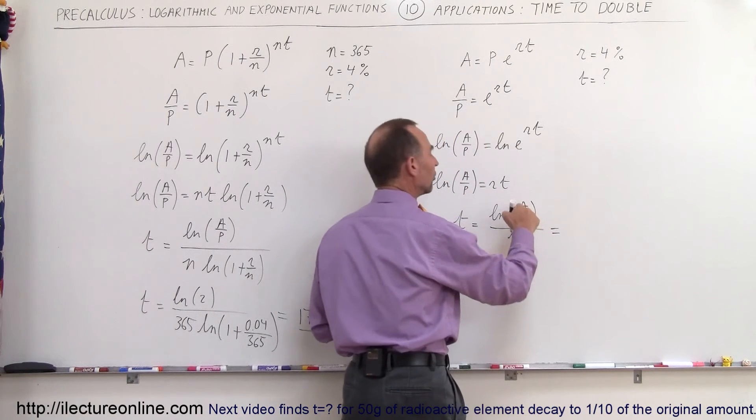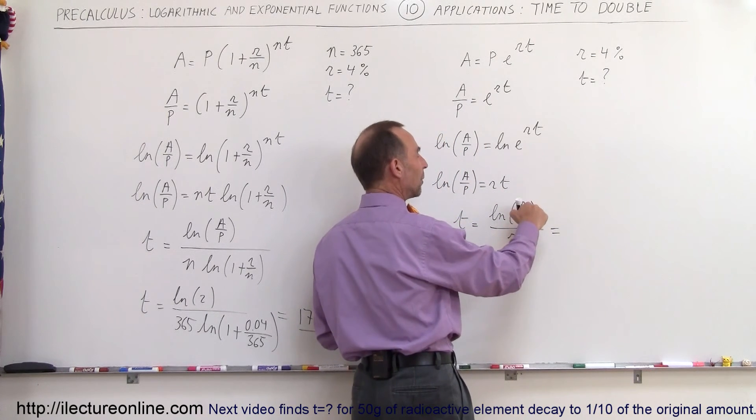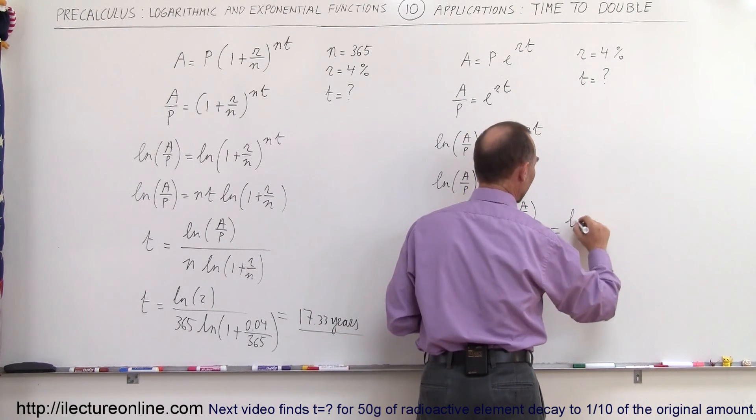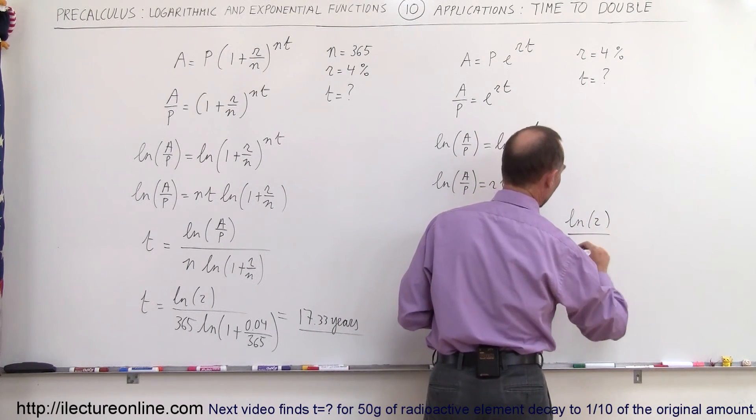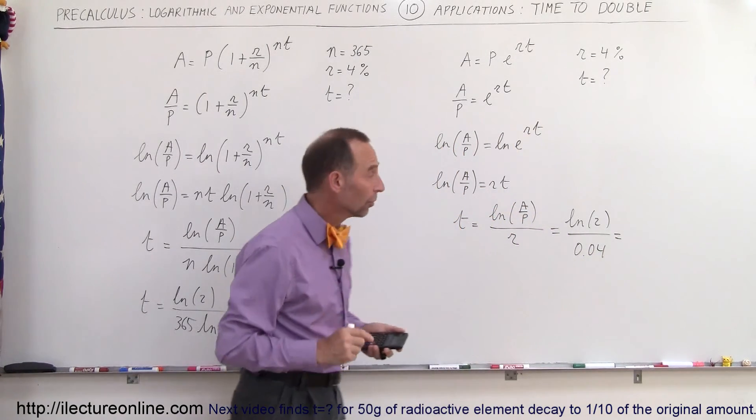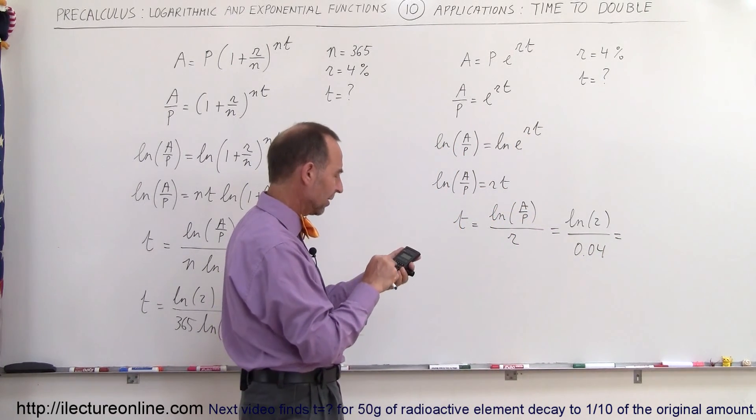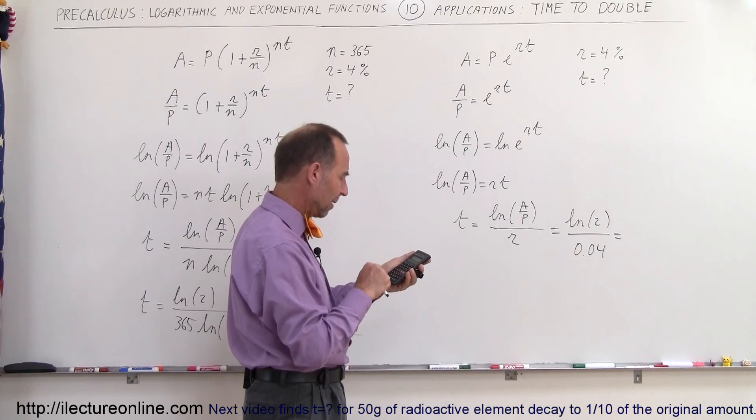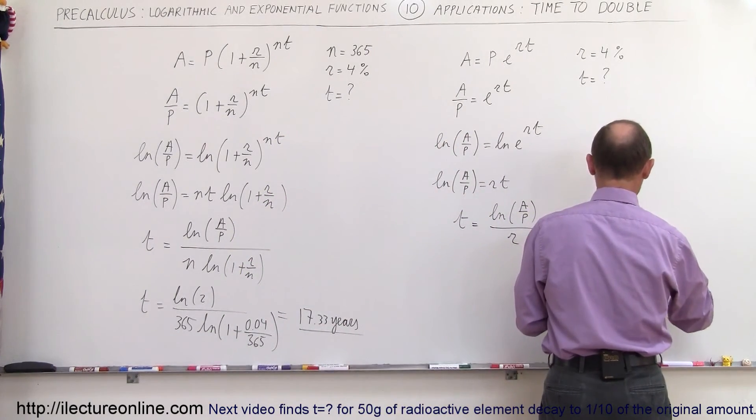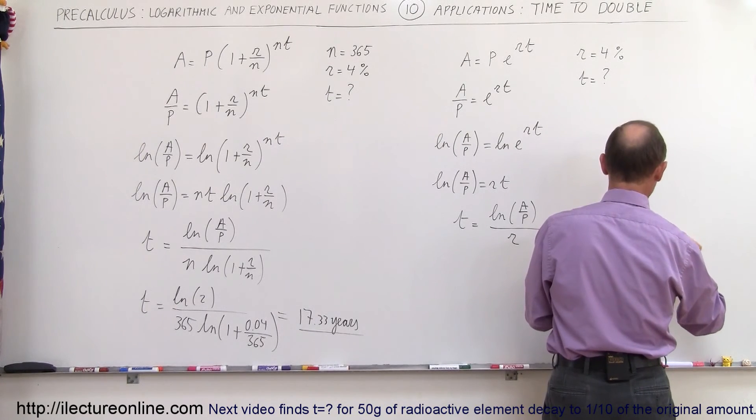So now remember that doubling the amount that we started with, a will be twice as big as p, so that would be a ratio of 2. So we get the natural log of 2 divided by the rate of 0.04, and that would be the time that it takes to double the investment. So 2, take the natural log of that, and divide by 0.04 equals, and we get 17.33 years.